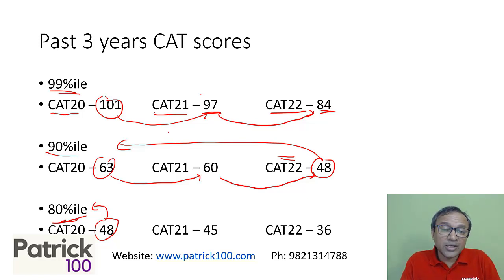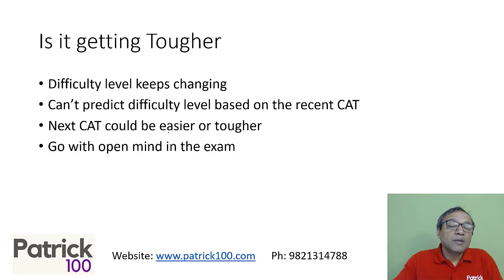We don't know how the examination is going to be in the next session. Because difficulty level keeps changing every year. Understand that. You can't predict difficulty based on past CAT papers. It has been varying over the years. And we cannot definitely say that the CAT next year is going to be more tough or more easy. The next CAT could be easier or tougher.